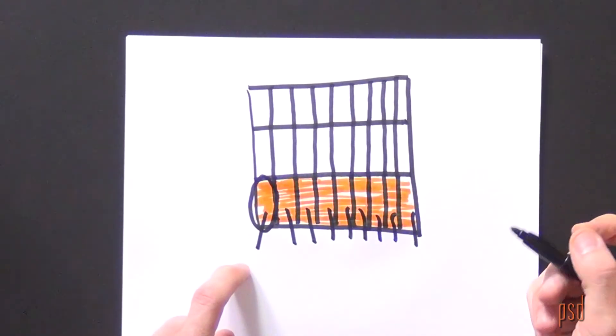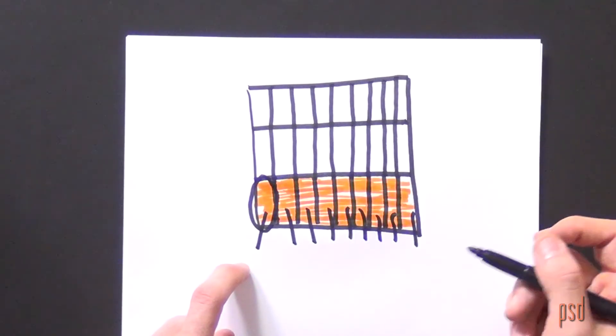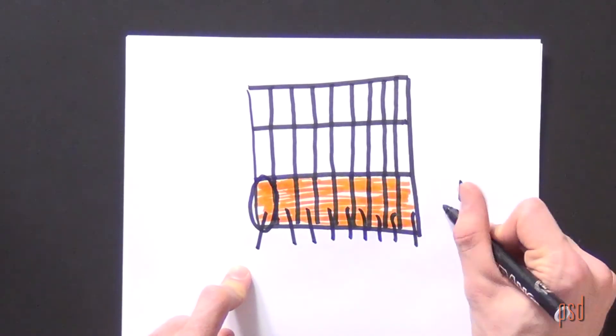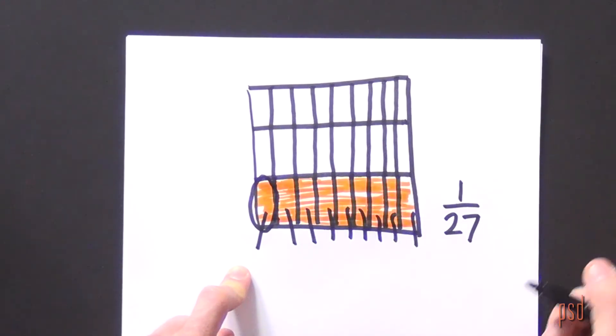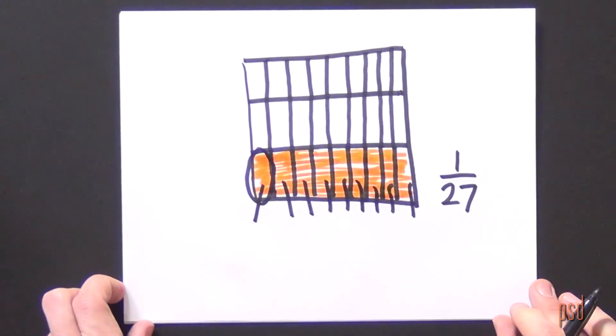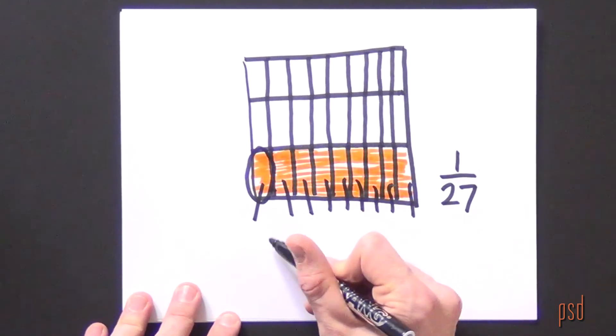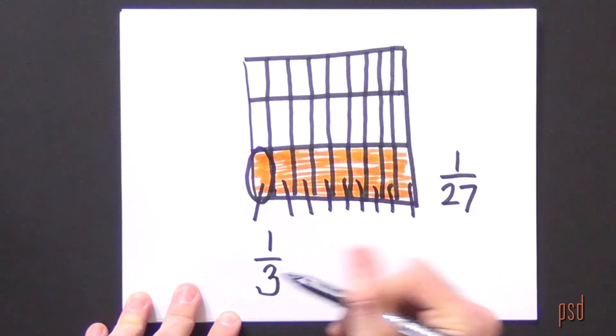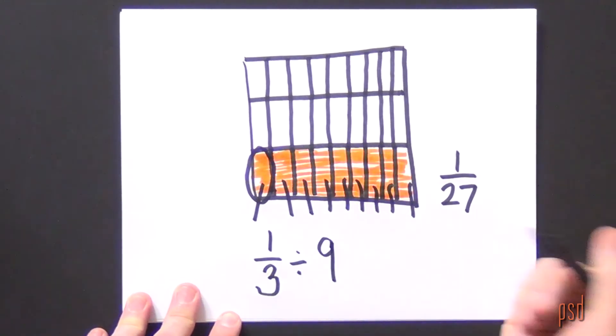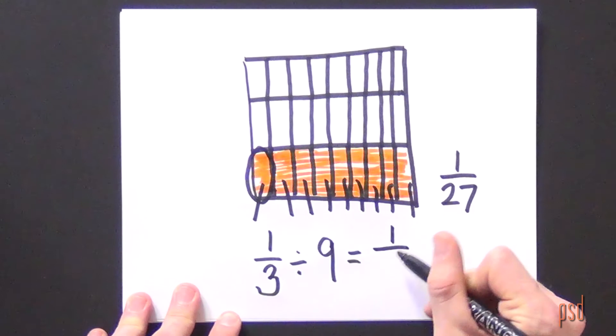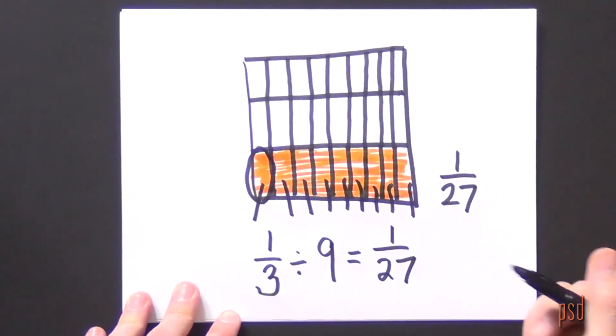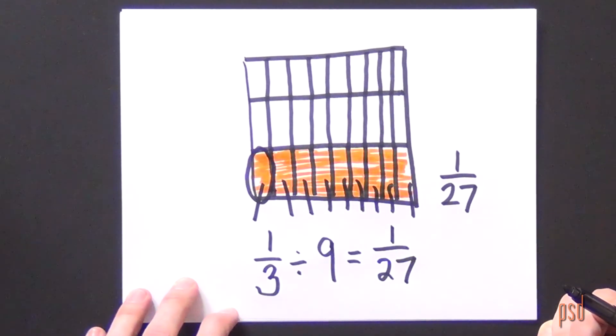The question says, how much of a whole gallon of ice cream does each student receive? Each student receives one-twenty-seventh of a whole gallon of ice cream. Let me write a number sentence to represent this. One-third gallon of ice cream divided between nine students means that each student will receive one-twenty-seventh of a gallon of ice cream.